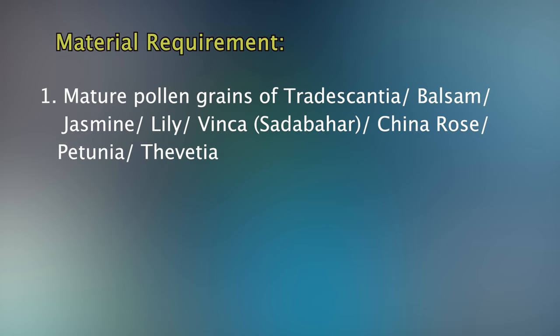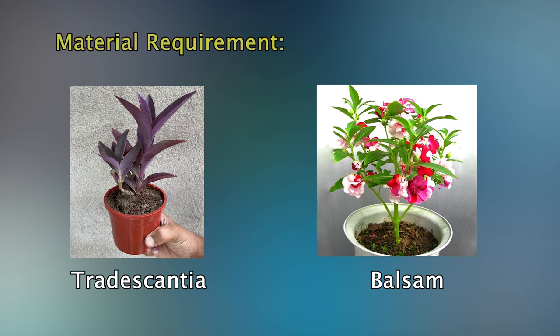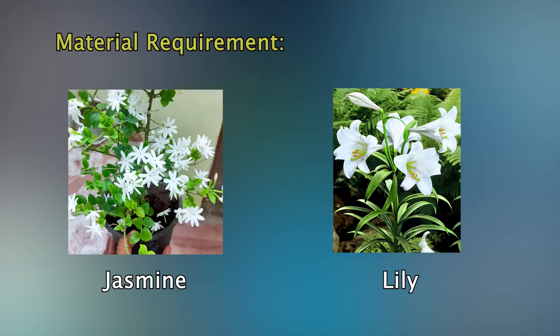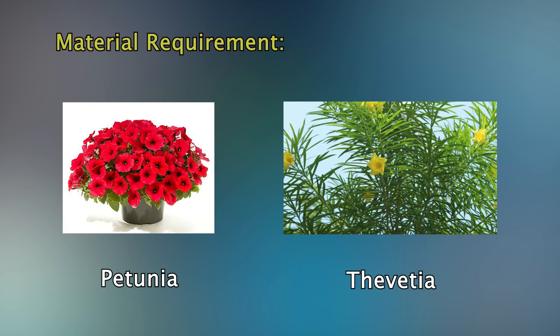To conduct and demonstrate this experiment, we require mature pollen grains of Tradescantia, balsam, jasmine, lily, Vinca rosea, China rose, petunia, or Thevesia — essentially any kind of flower.